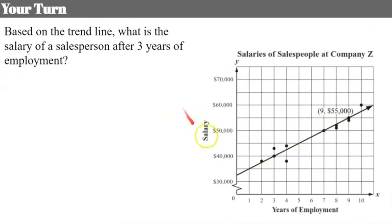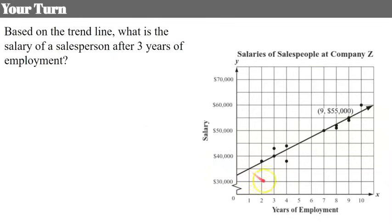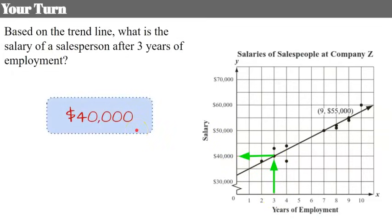Now it's your turn — here's another example from our state assessment. It's already graphed for you, and the trend line is provided so we all have the same answers. Pause the video and determine the salary of a salesperson after three years of employment. Welcome back. We go to three years of employment on the graph, up to the trend line, then over to the Y axis, and we can determine that after three years, a salesperson at Company Z would be making $40,000 a year.